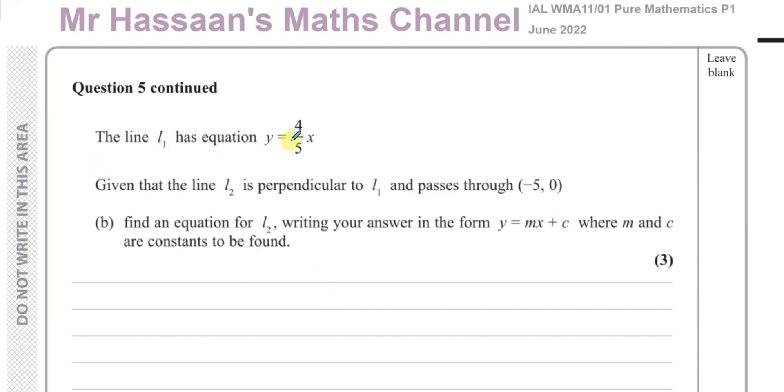It says a line L1 has equation Y equals 4 over 5X. Given that line L2 is perpendicular to line L1 and passes through the point negative 5, 0, find an equation for line L2, writing your answer in the form Y equals MX plus C, where M and C are constants to be found.